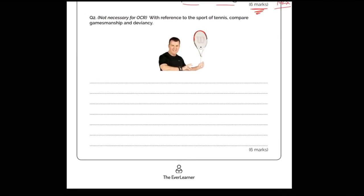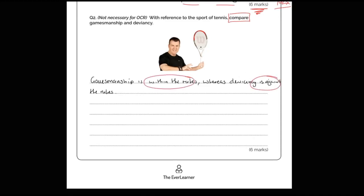Compare questions must be met with comparative statements. Let's go through this slowly. 'Gamesmanship is within the rules, whereas deviancy is against the rules.' Now, the weakness with that comparative statement in relation to the question is that I haven't made reference to tennis. If you're asked to give examples, you must give examples. 'Gamesmanship is morally dubious. Similarly, deviancy is immoral - such as a tennis player taking steroids.' Now I've got my example in there.